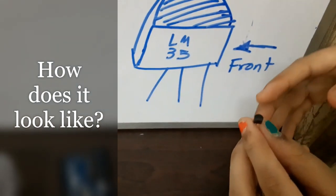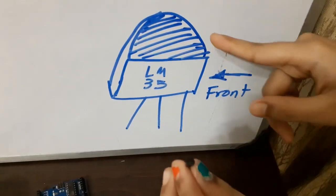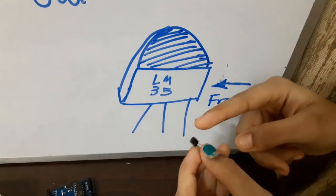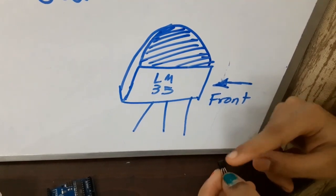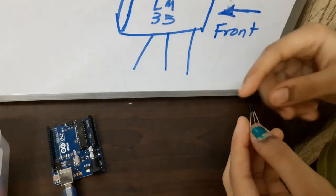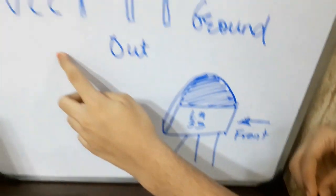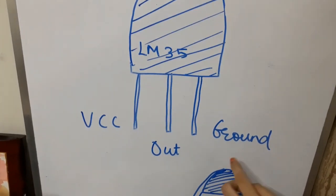When you look at it from the top, you can see a semicircular shape, like this. And this is its flat side, which is its front face, where you can also see LM35 mentioned. It has three pins: VCC, out and ground.